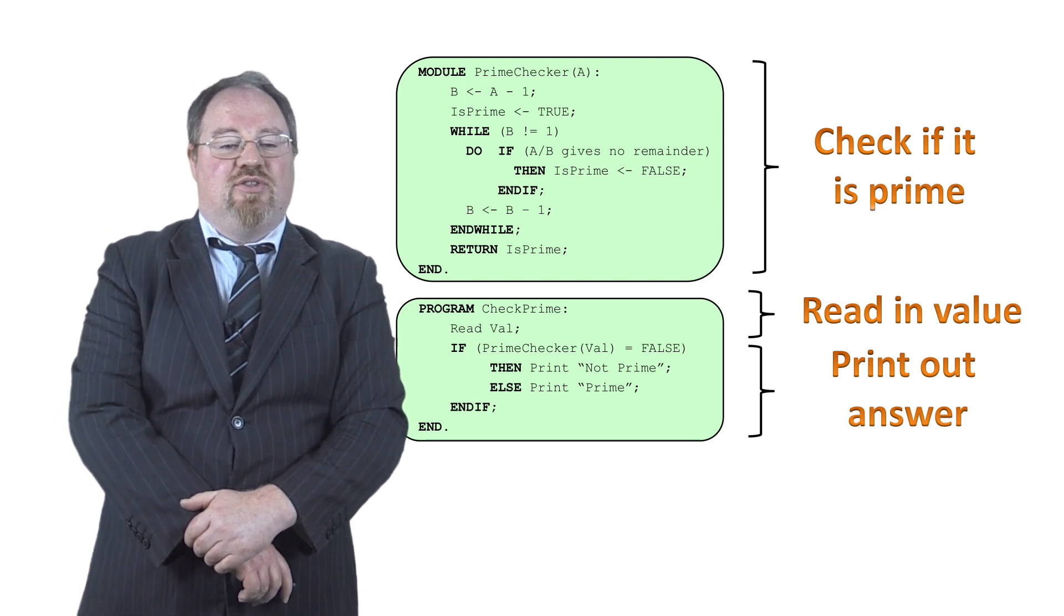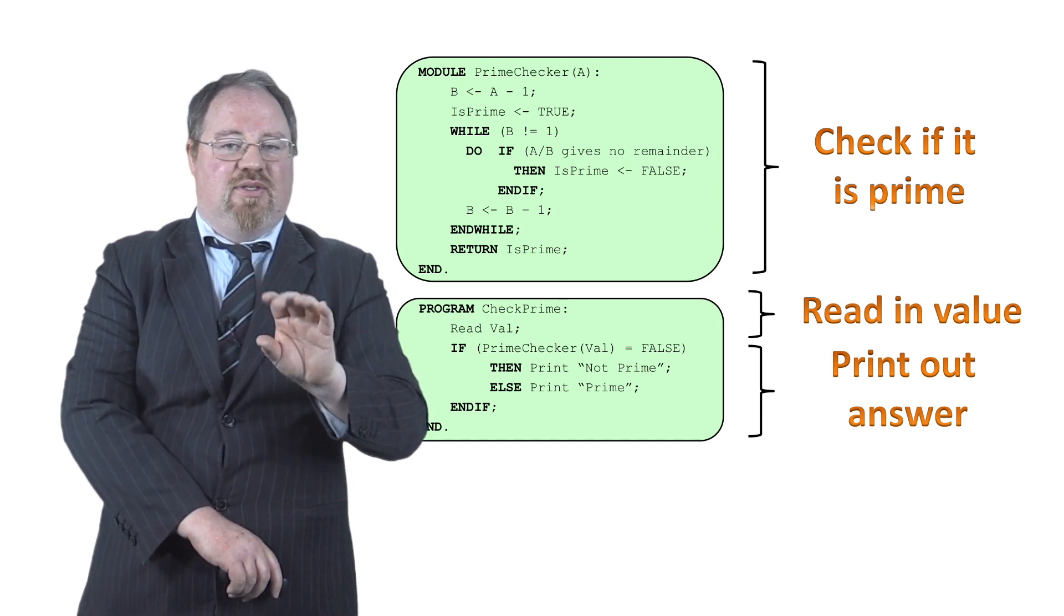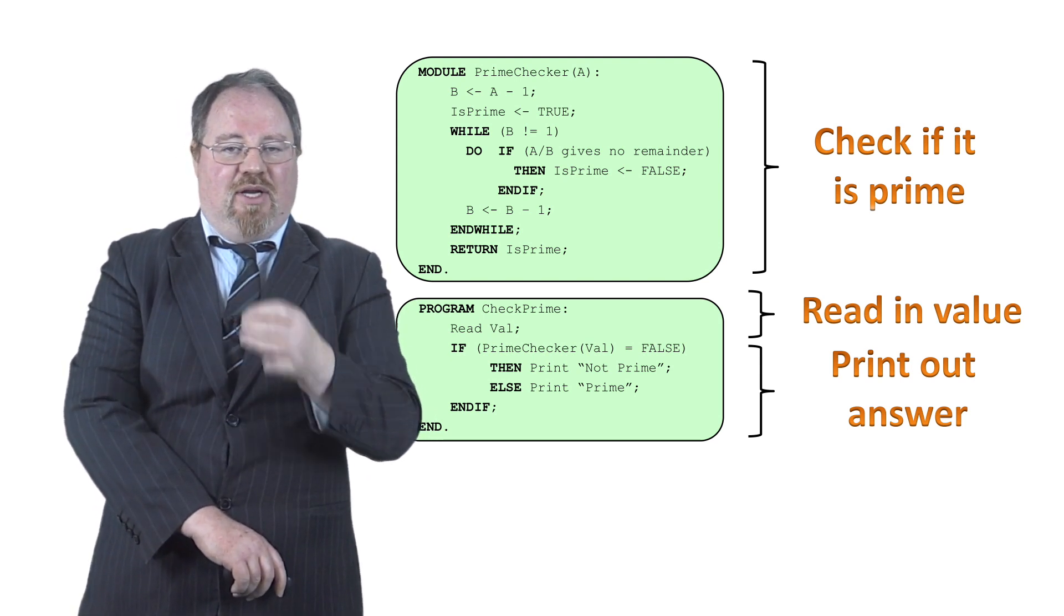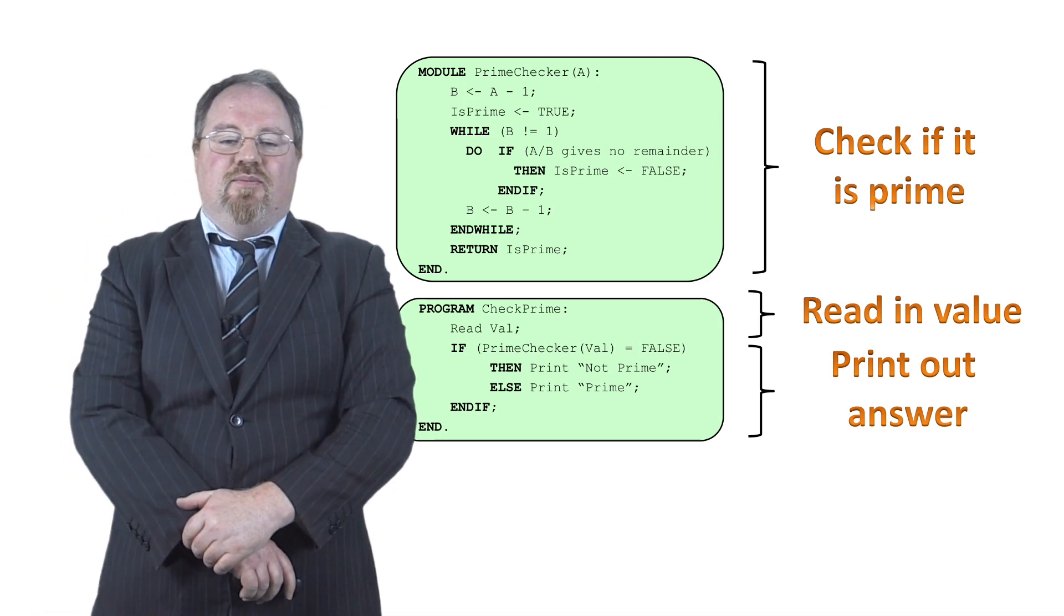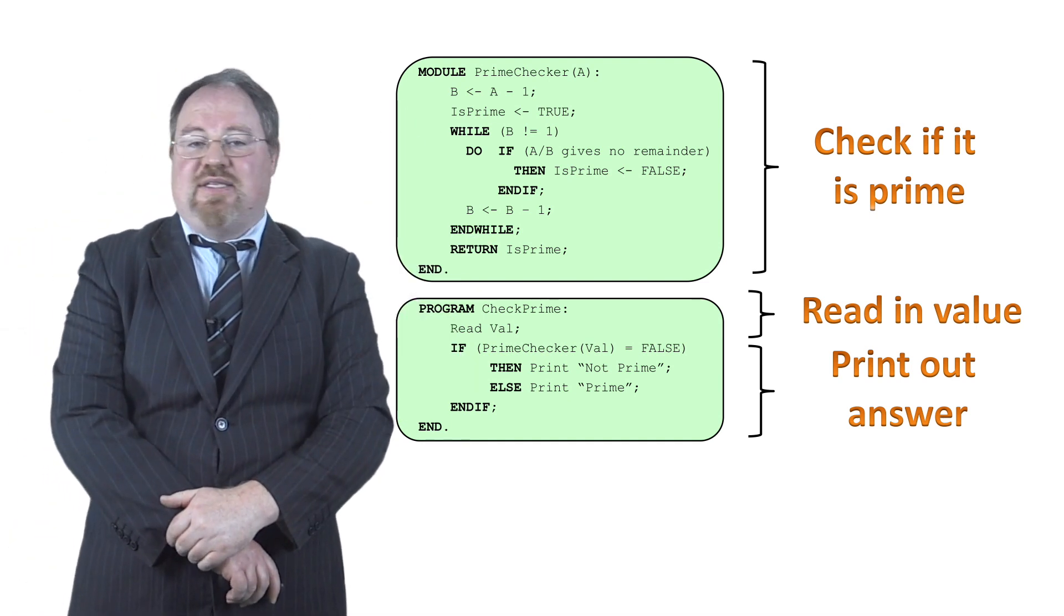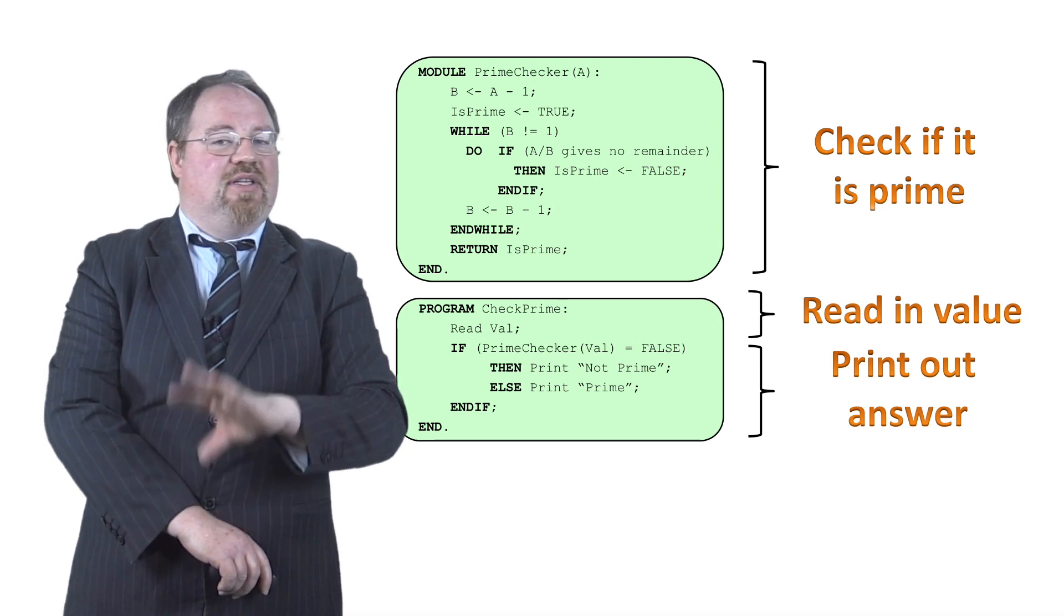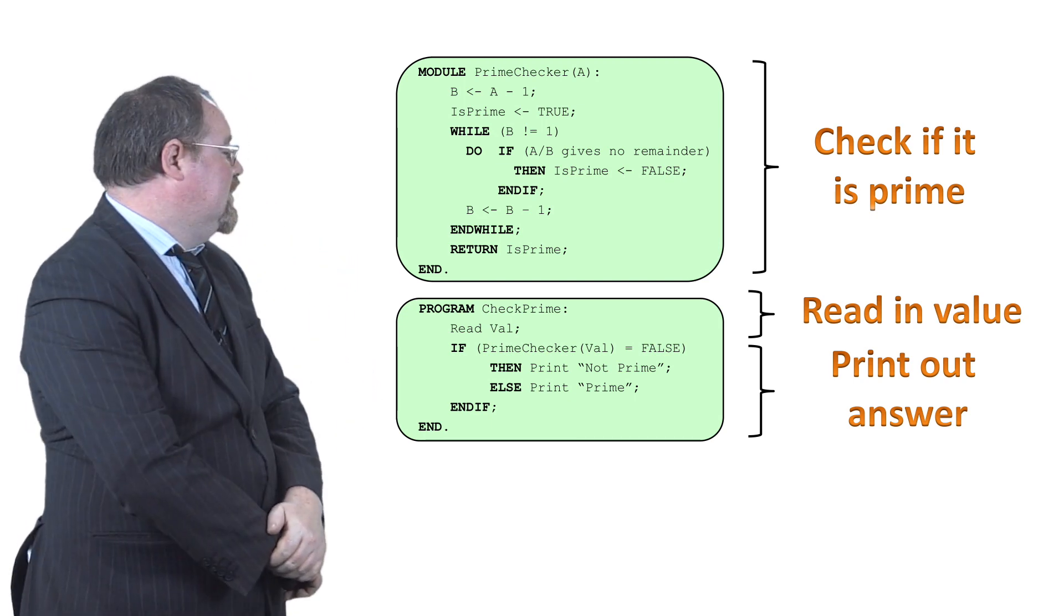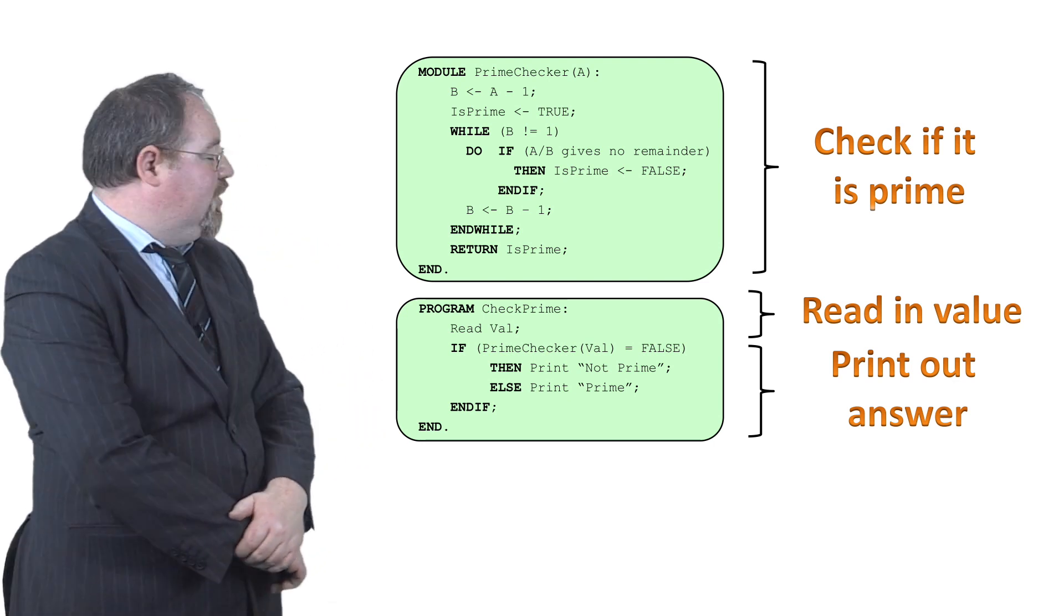So it's a very small change, but instead of a main program calling a module with no parameters and returning a value back, we have a main program calling a module with one parameter and then returning one value back. So our module to check if a number is prime or not now is simply doing that. It's just checking if the number is prime. It receives in a value and then it checks if that number is prime or not. So it's doing one thing well, as opposed to two things.